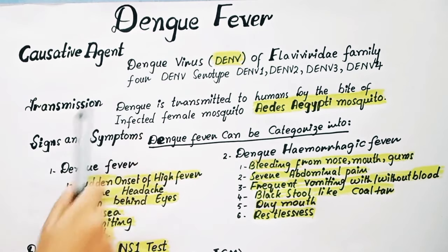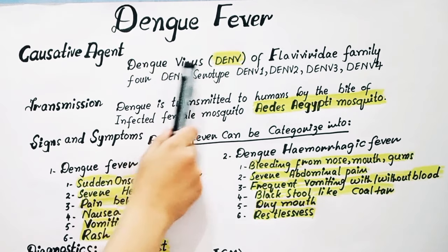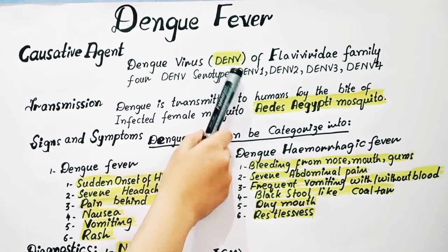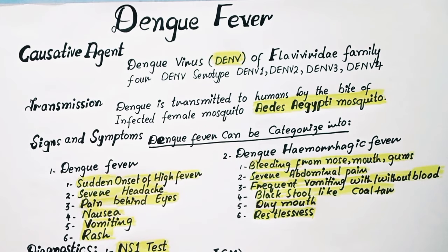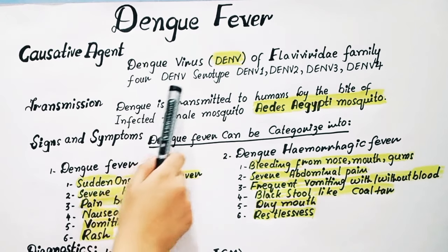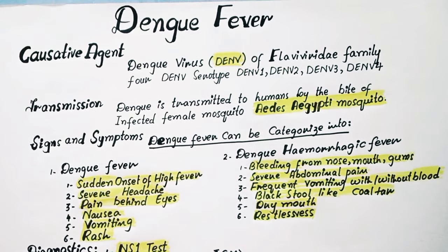The causative agent of dengue fever is the dengue virus, which belongs to the family Flaviviridae. There are four serotypes of this dengue virus, which means it is possible to be infected four times. The serotypes are Dengue 1, Dengue 2, Dengue 3, and Dengue 4.